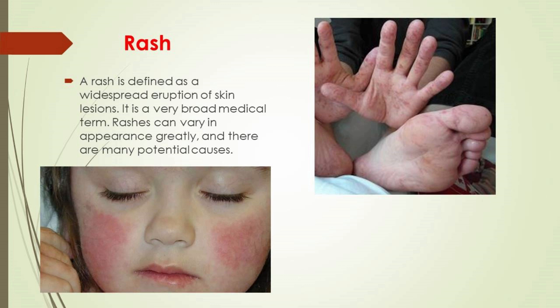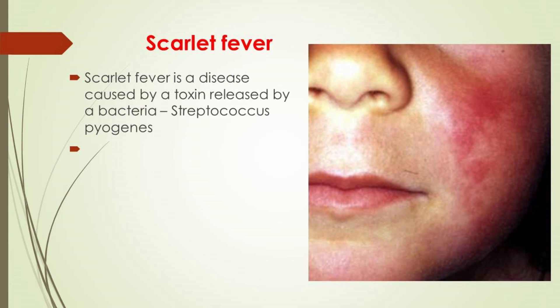A rash is defined as a widespread eruption of skin lesions — a broad medical term. Hand, foot, and mouth disease is a childhood illness from viral infection; symptoms include rash, flat non-irritated blisters, ulcers on the hands and soles of the feet, loss of appetite, and ulcers on the throat, tongue, and mouth. Scarlet fever is caused by a toxin from the bacterium Streptococcus pyogenes; symptoms include sore throat, rash, and fever — with red blotches turning into a fine pink-red rash and rough-feeling skin.